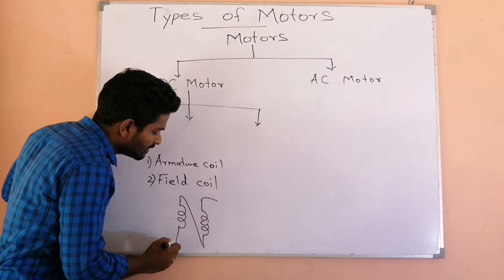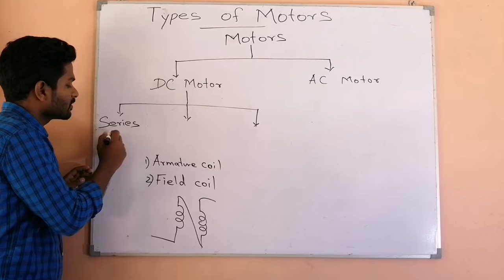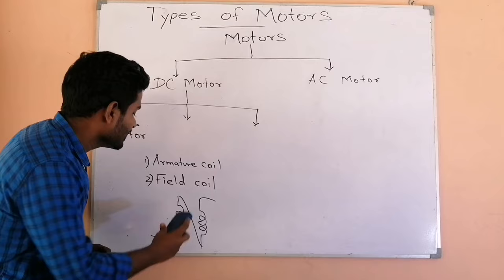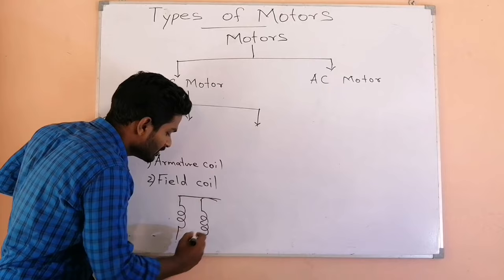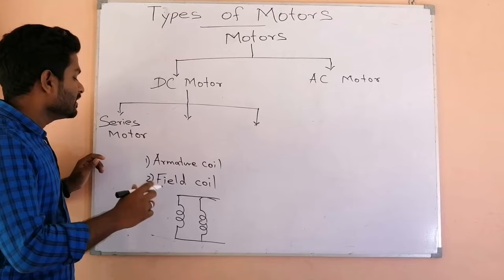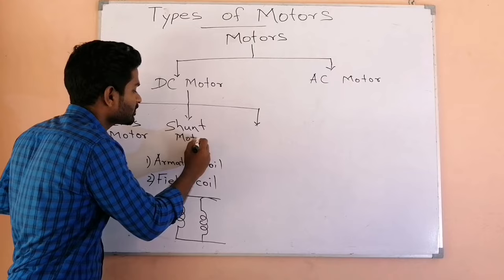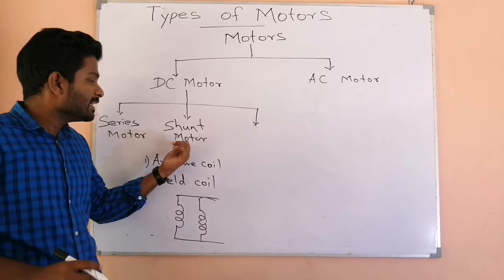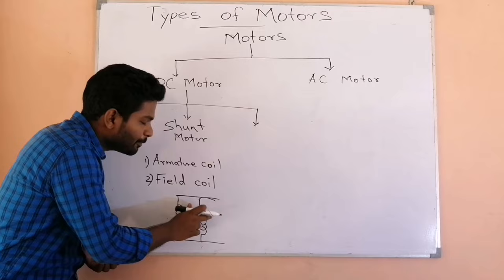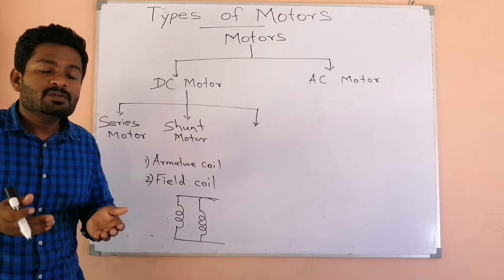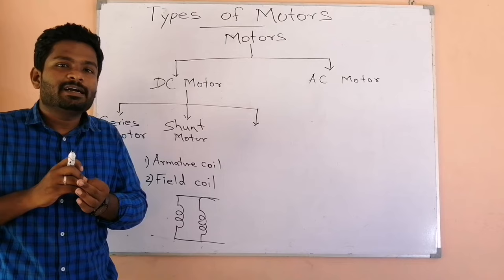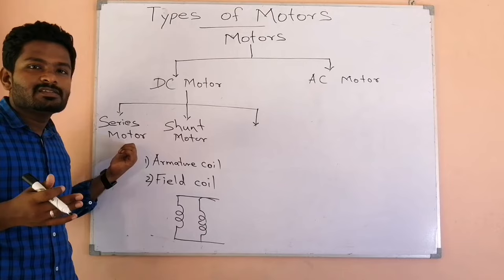One way of connecting the two coils is a series connection — when both coils are connected in series, that type of motor is called a series motor. Another way is a parallel connection — when both coils are connected in parallel, that kind of motor is called a shunt motor. When connected in series or parallel, the motor shows different characteristics in terms of torque and speed.